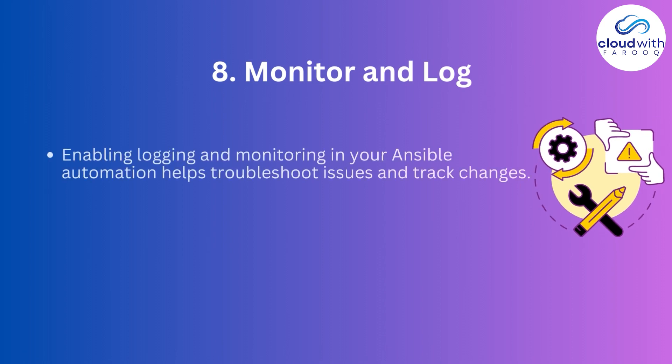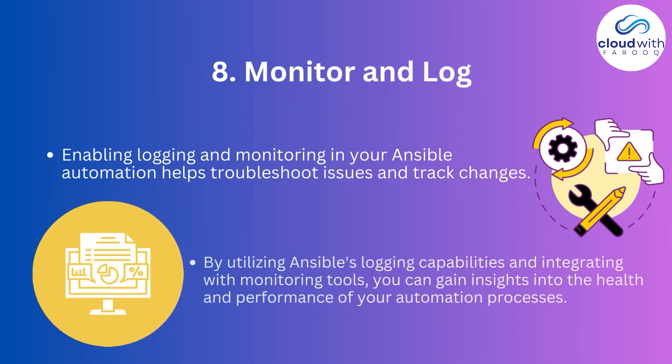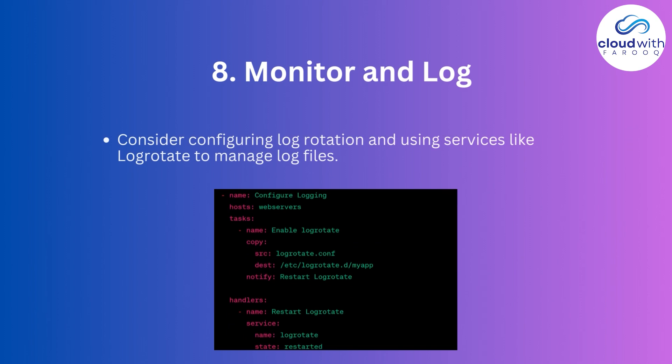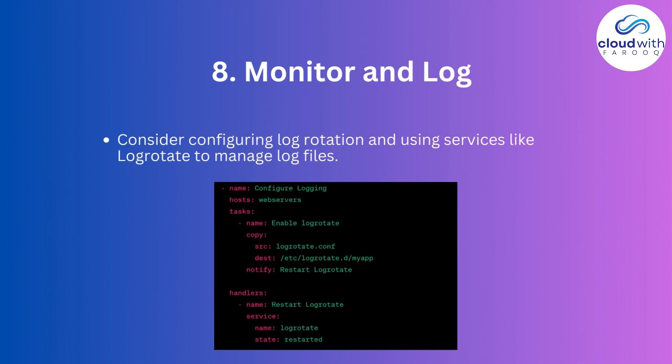Number eight: monitor and log. Enabling logging and monitoring in your Ansible automation helps troubleshoot issues and track changes. By utilizing Ansible's logging capabilities and integrating with monitoring tools, you can gain insights into the health and performance of your automation processes. Consider configuring log rotation and using services like LogRotate to manage log files.